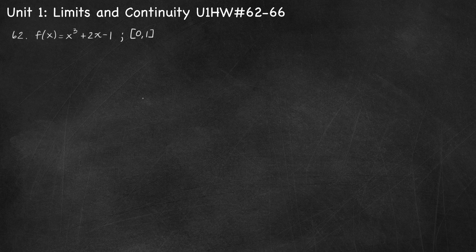Hello, in this video I'll be working through unit 1 homework problems 62 through 66. For number 62 we want to show using the intermediate value theorem that the function f of x equals x cubed plus 2x minus 1 has a zero on the interval from 0 to 1.